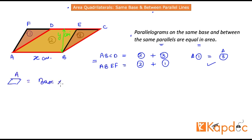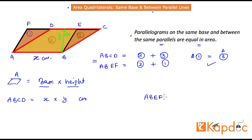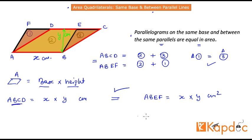The area of a parallelogram is base times height. So the area of parallelogram ABCD equals x × y cm². Similarly, the area of parallelogram ABEF equals x × y cm², since both share the same base AB and the same height y. Both areas are equal — this is the mathematical proof of equivalency.